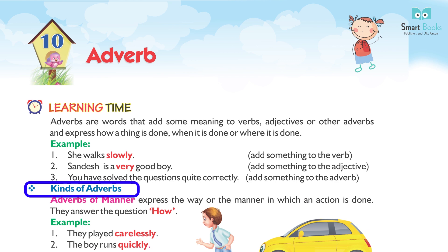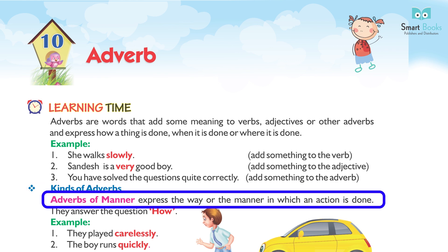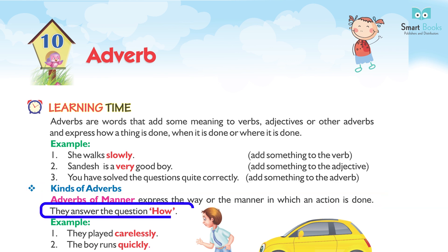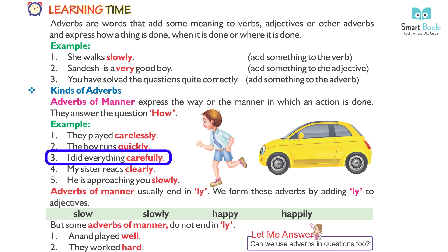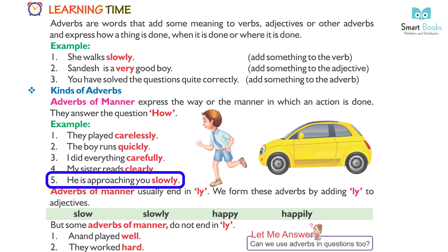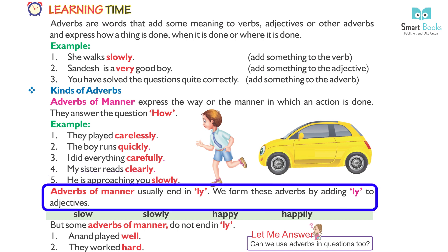Kinds of adverbs. Adverbs of manner express the way or the manner in which an action is done. They answer the question 'how.' Examples: 1. They play it carelessly. 2. The boy runs quickly. 3. I did everything carefully. 4. My sister reads clearly. 5. He is approaching you slowly. Adverbs of manner usually end in -ly.